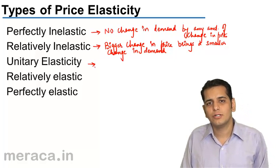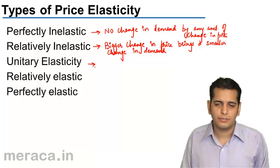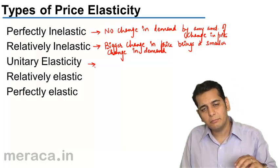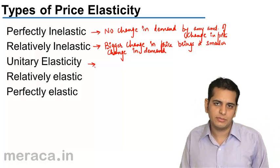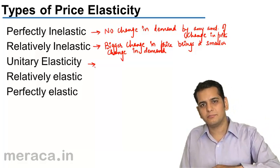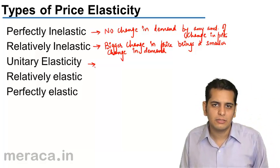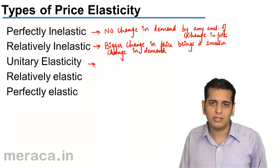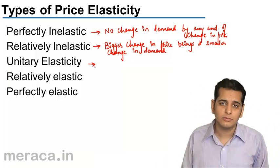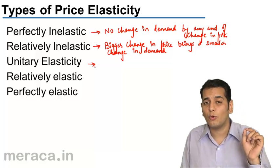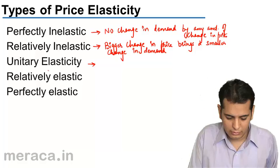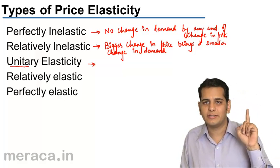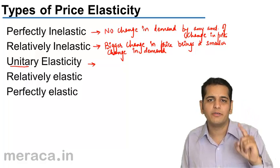What is unitary elasticity of demand? Unitary elasticity of demand is when demand changes in proportion to the change in price — that is, a change in price brings about a proportional change in demand. In other words, the percentage change in price and the percentage change in demand are equal. The answer will always be 1, and thus we call it unitary elasticity, where the elasticity of demand is always 1.